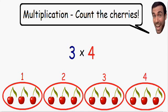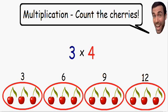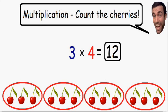So now how many cherries do we have in total? Well we started with 3 cherries and we need to add 3 for each group. So we have 3, 6, 9, 12 cherries in total. So 3 times 4 is equal to 12.